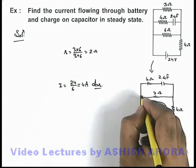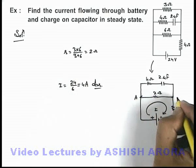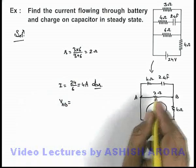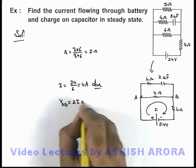And if the current is 4 ampere we can calculate the potential difference across terminals A and B. V_AB can be written as this will be 2 I, that will be 8 volt.